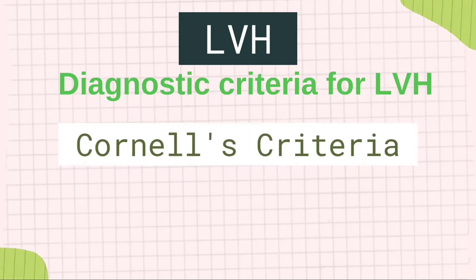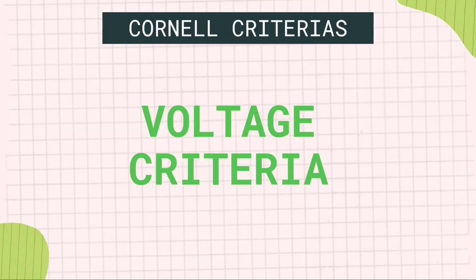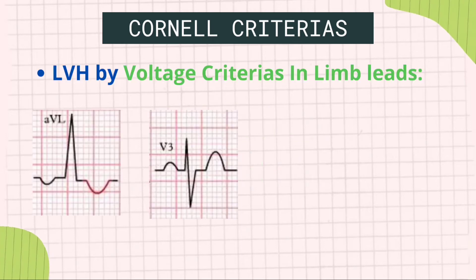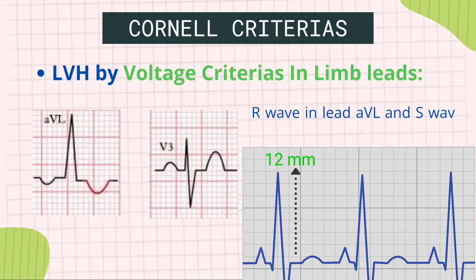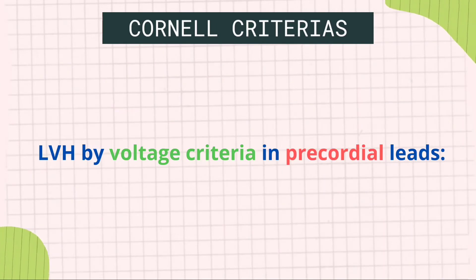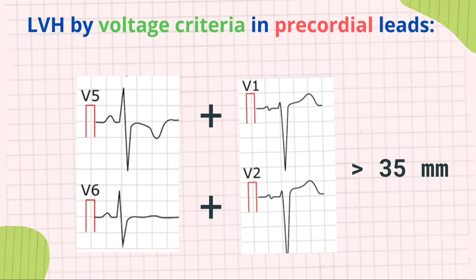There are several criteria introduced to diagnose left ventricular hypertrophy on an ECG. Cornell's criteria is one of the most widely used in clinical practice. The voltage criteria given by Dr. Cornell includes: the length of the R wave in lead AVL should exceed 12 mm, along with the amplitude of the S wave in lead V3. Additionally, the length of the S wave in lead V1 or V3 plus the R wave in lead V5 or V6 should be greater than 35 mm.